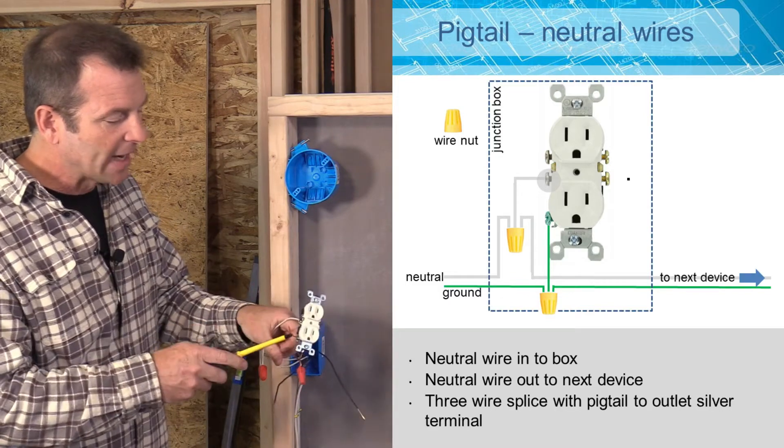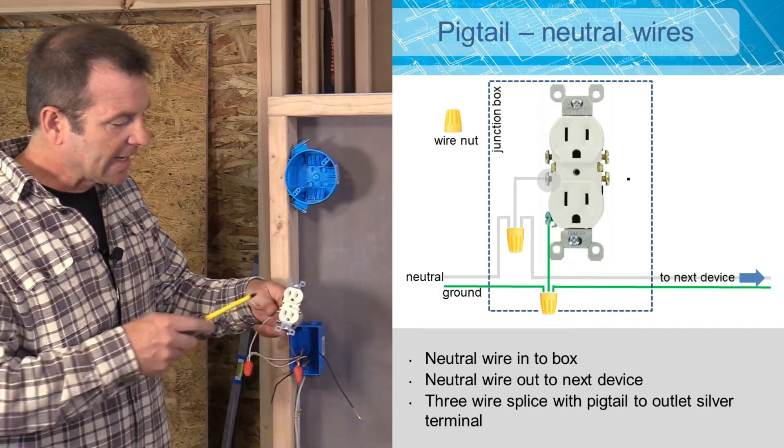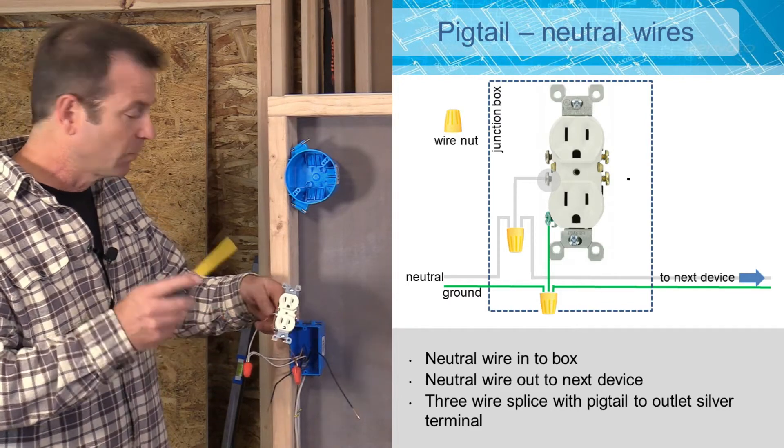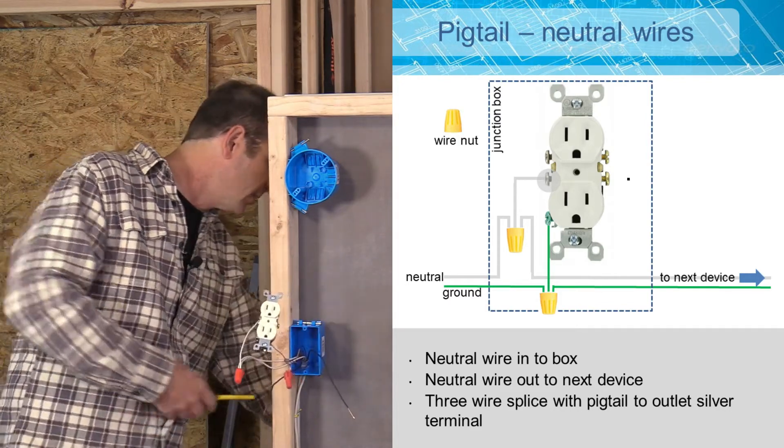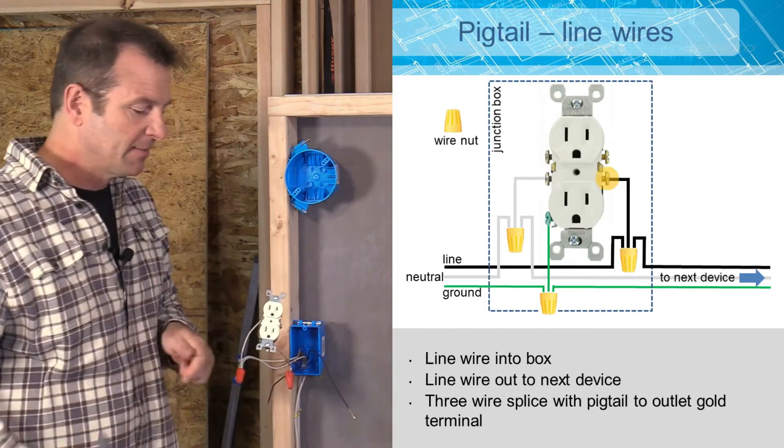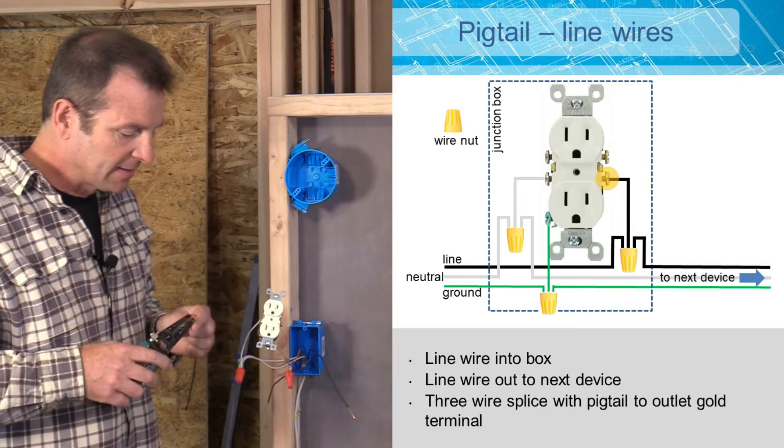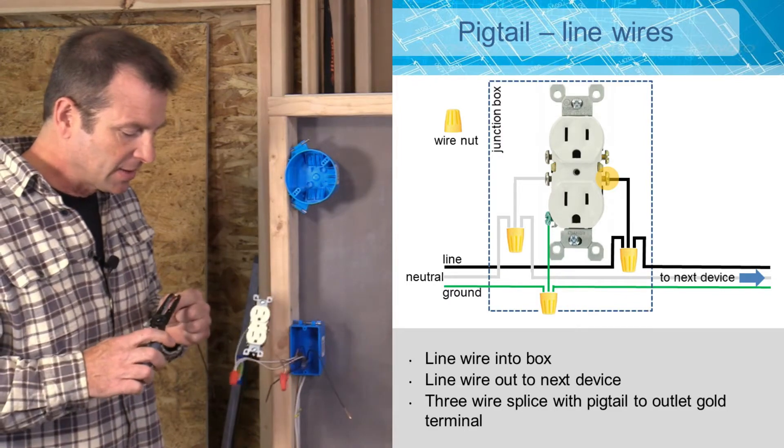So there I have my ground pigtail. And I have my neutral pigtail. I have three wires coming in here and then only one going. I have one left to do. That's going to be my hot wire or my black wire. So I'm going to strip the end of that. Go ahead and bend the hook on it.